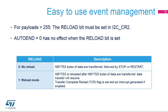When the payload is greater than 255 bytes, the reload bit must be set in I2C control register 2. In this case, the transfer complete reload, or TCR flag, is set after the programmed number of bytes has been transferred. The additional number of bytes to be transferred is programmed when the TCR bit is set, and then the data transfer will resume. The I2C clock is stretched low as long as the TCR bit is set. The reload bit is used in master mode when the payload is greater than 255 bytes, and in slave mode when slave byte control is enabled.